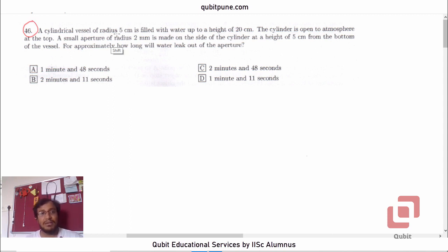The question says: a cylindrical vessel of radius 5 cm is filled with water up to a height of 20 cm. The cylinder is open to atmosphere at the top. A small aperture of radius 2 mm is made on the side of the cylinder at a height of 5 cm from the bottom of the vessel.